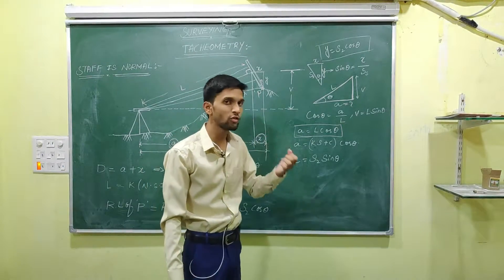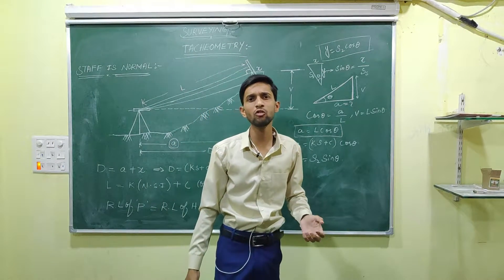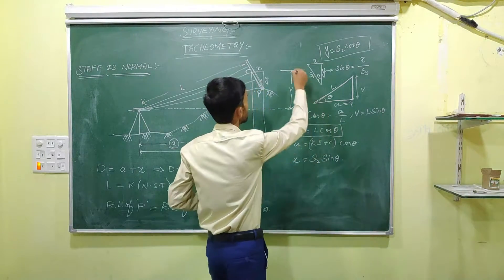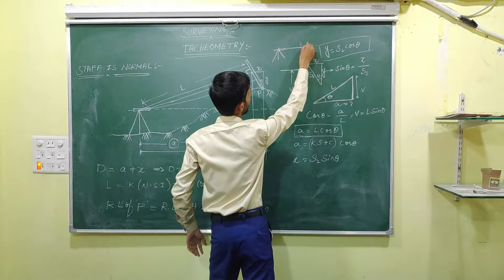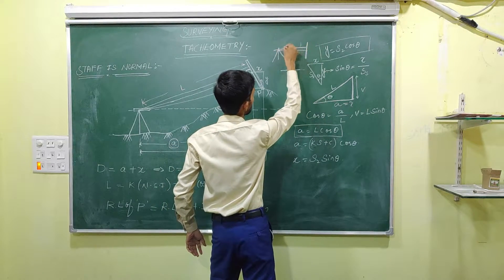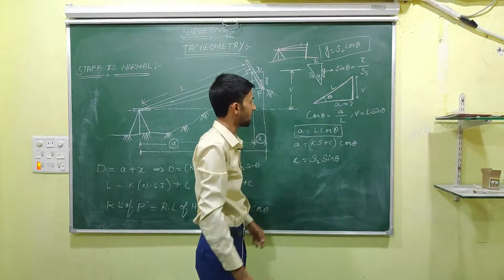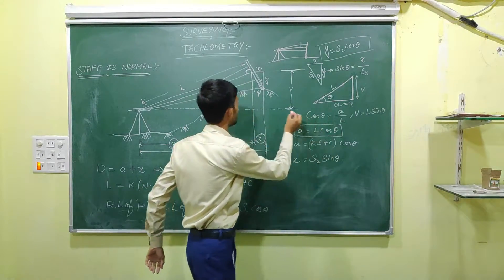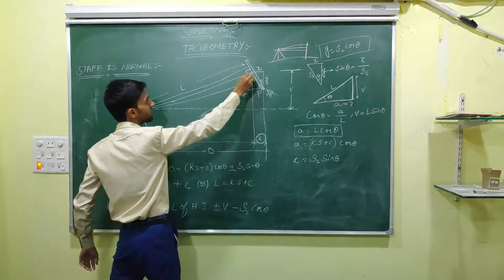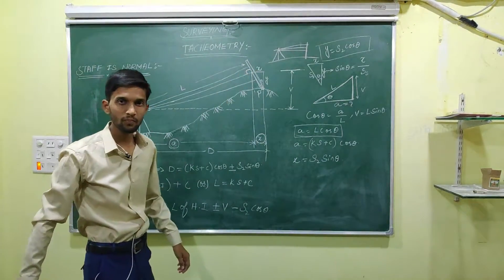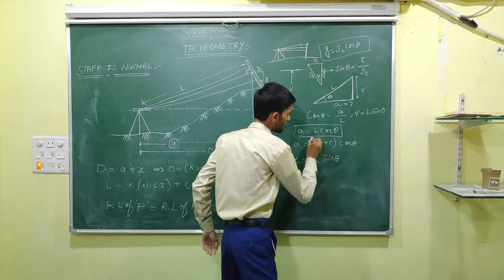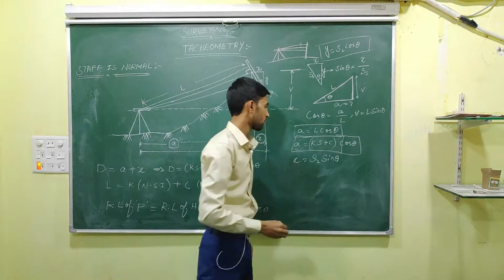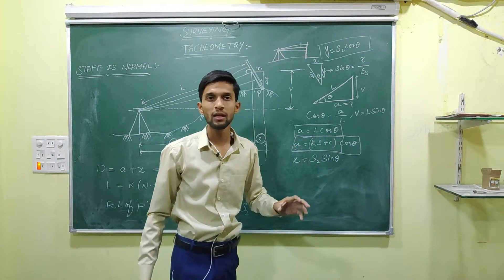The basic assumption when the stop is normal is that the line of sight is normal to the stop. Under this assumption we derived the formula L = KS + C. In this setup also, our line of sight is normal to our stop, so L = KS + C. Therefore, A = L cos θ = (KS + C) cos θ.